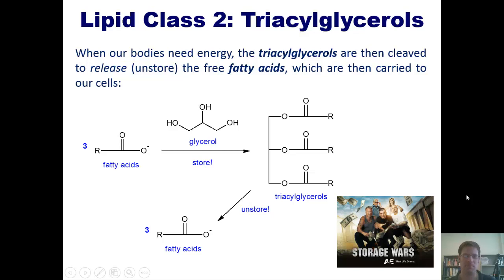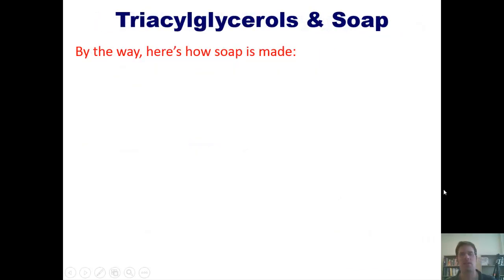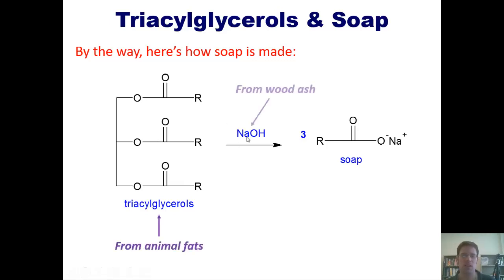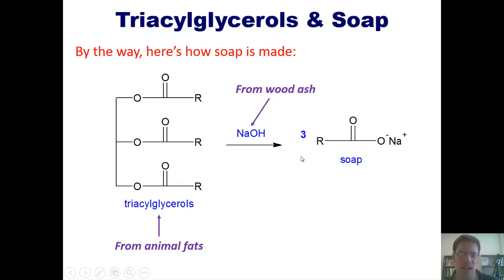Here is how soap is made. Soap is made by grabbing triacylglycerols, which are obtained traditionally from animal fat, and then reacting them with sodium hydroxide. Sodium hydroxide, often obtained from wood ash or lye, cleaves off all of those groups and releases a free fatty acid which now has a counterion of sodium cation. This is the structure of soap. My mom, who was born in 1937, actually grew up on a farm where they made their own soap using this technique.